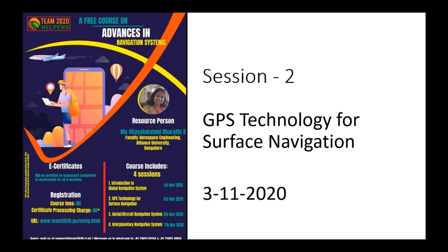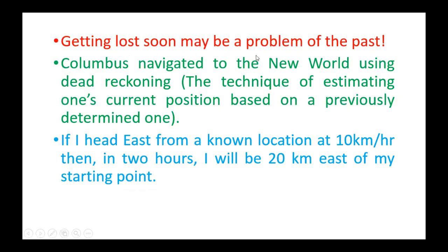In this session, we will be learning about GPS Technology for Surface Navigation. Getting lost may soon be a problem of the past. Columbus navigated to the New World using a technique called Dead Reckoning — the technique of estimating one's current position based on a previously determined position. For example, if I head east from a known location at 10 km per hour, then in 2 hours I will be 20 km east of my starting point. This is the dead reckoning technique.